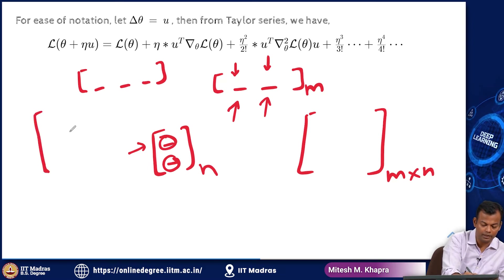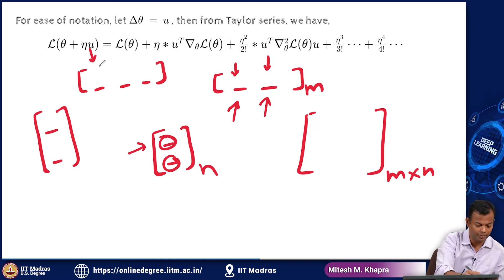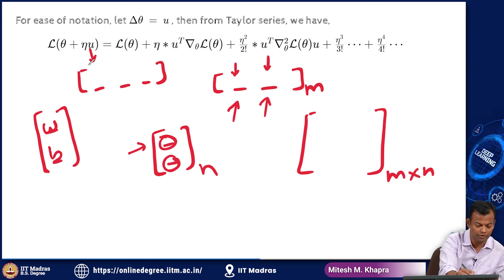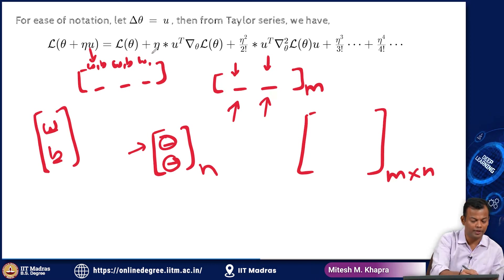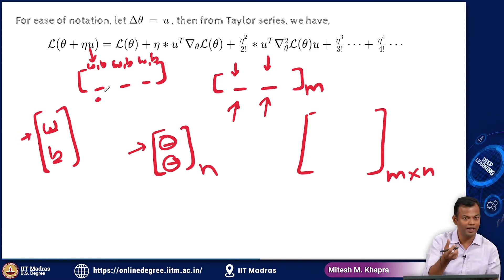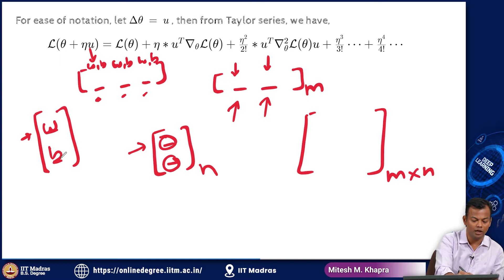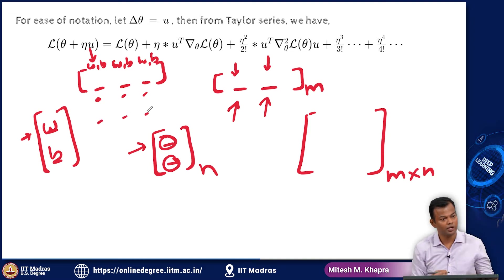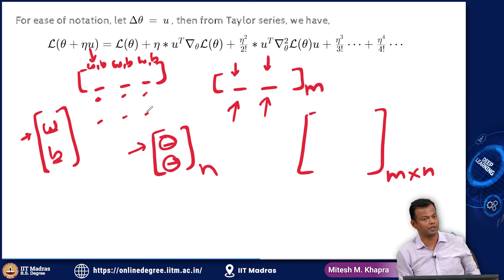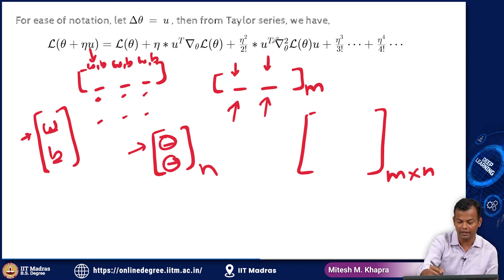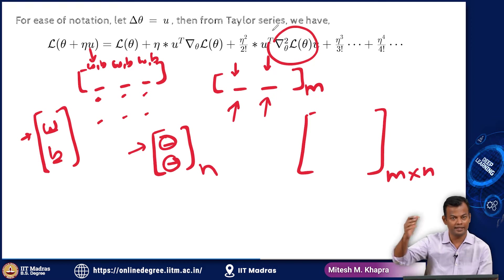If you have 3 elements in this vector and you are taking the derivative with respect to 2 elements — say parameters w and b — each element is a function of (w, b). When you change w, you see how much each of the 3 values changes; then change b and do the same — 6 values total, giving a 3×2 matrix. This second order derivative is called the Hessian matrix.